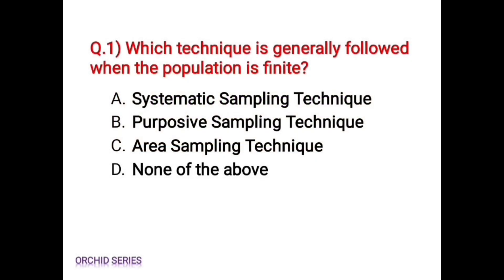The first question is: which technique is generally followed when the population is finite? Option A, systematic sampling technique. Option B, purposive sampling technique. Option C, area sampling technique. Option D, none of the above.